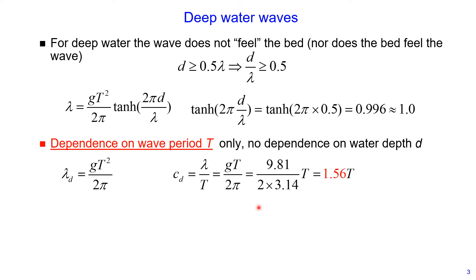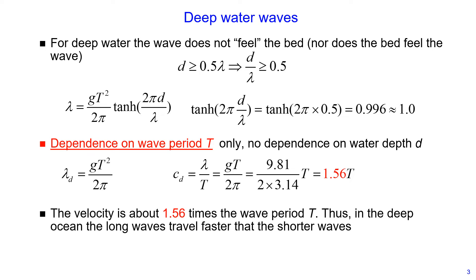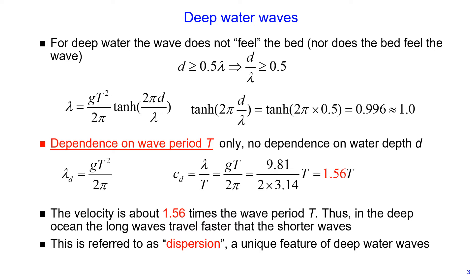We know that wave speed equals wavelength divided by wave period. Substituting the deep water wavelength equation, we get the wave speed equal to gravity multiplied by wave period divided by 2π. Substituting the constant values gives wave speed equal to 1.56 multiplied by wave period. Therefore, in the deep ocean the longest waves travel faster than shorter waves, which is referred to as dispersion — a unique feature of deep water waves.